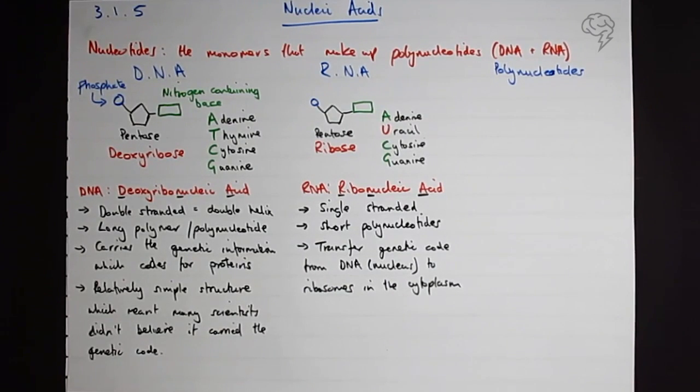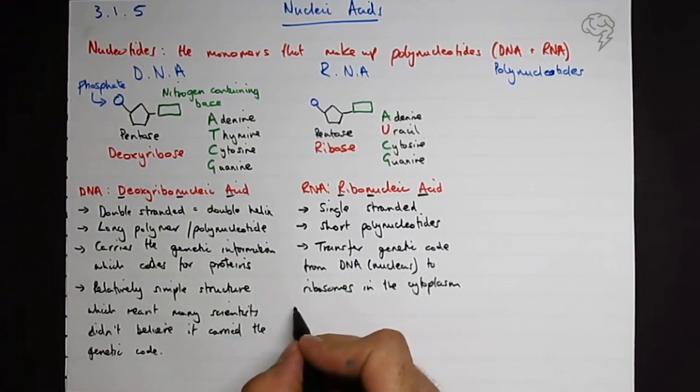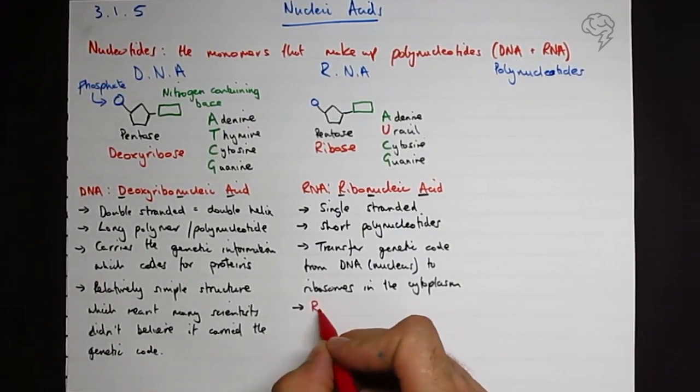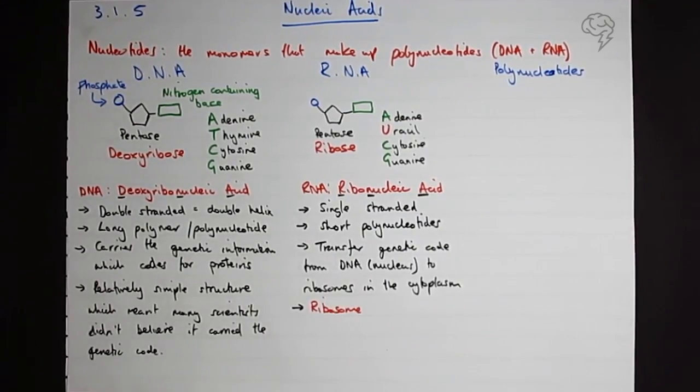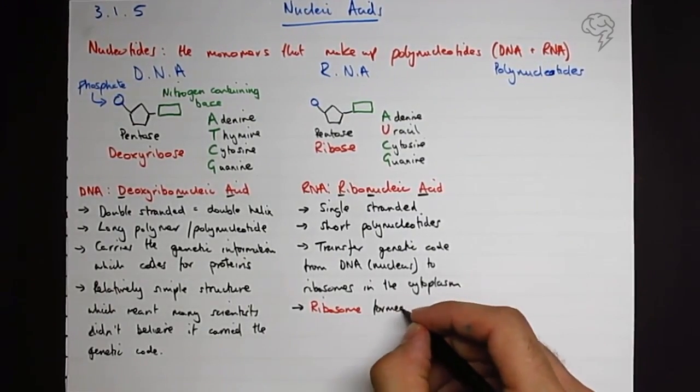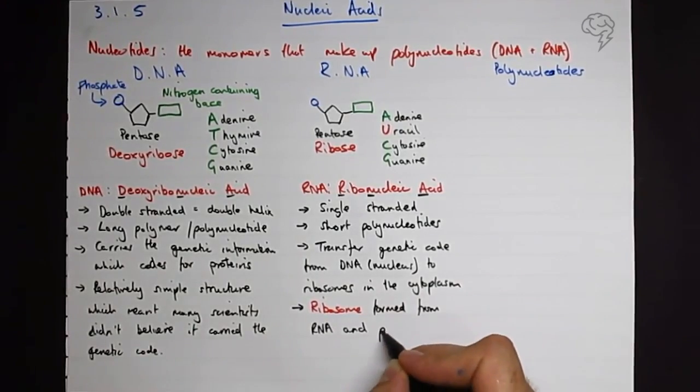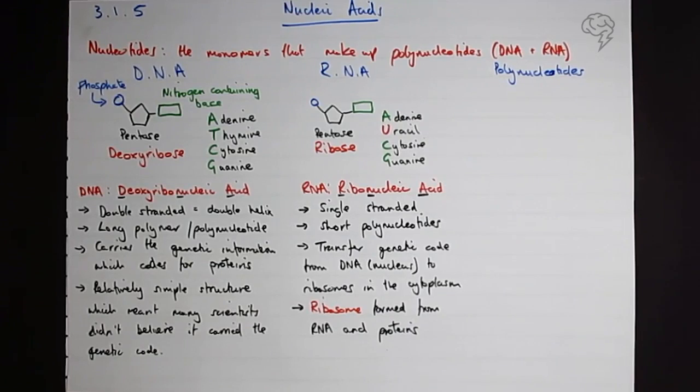What is a ribosome? Well, we're going to look at the organelles inside of a cell, but for this section of the course you need to know a ribosome is formed from RNA and proteins. So they are proteins and they make proteins, so it's like a factory that makes a factory.